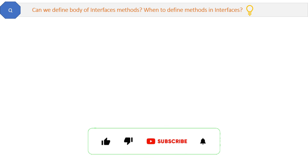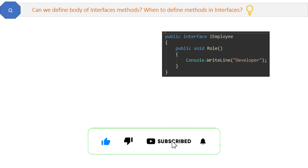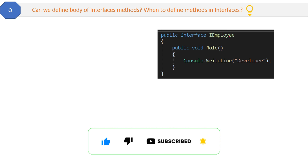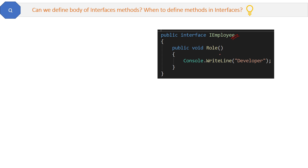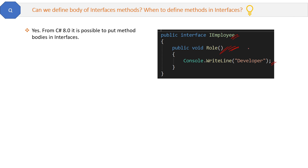Can we define a body for interface methods? If you see this code, we can define a method inside an interface like this and no error will come. So the answer is yes — from C# 8.0 it is possible to put method bodies inside interfaces. But why did Microsoft allow method bodies in interfaces?